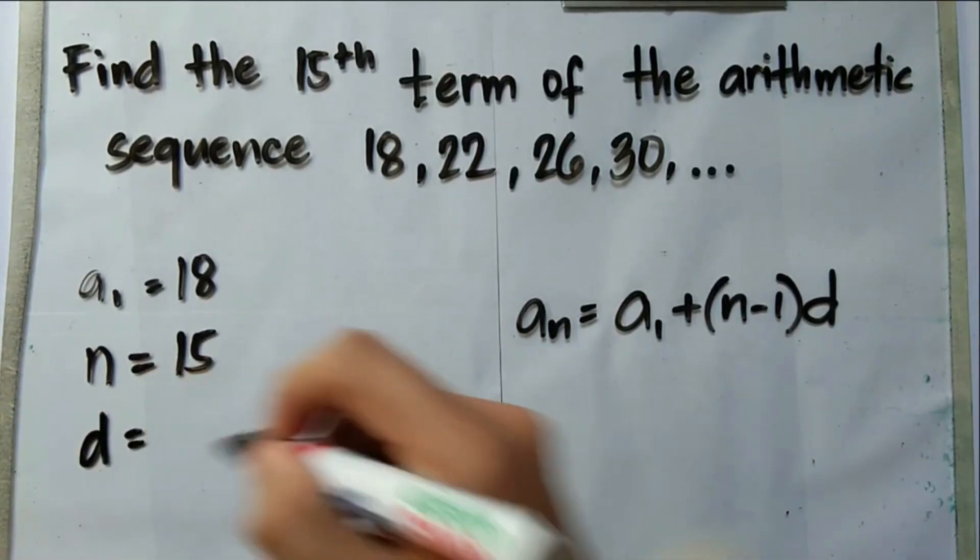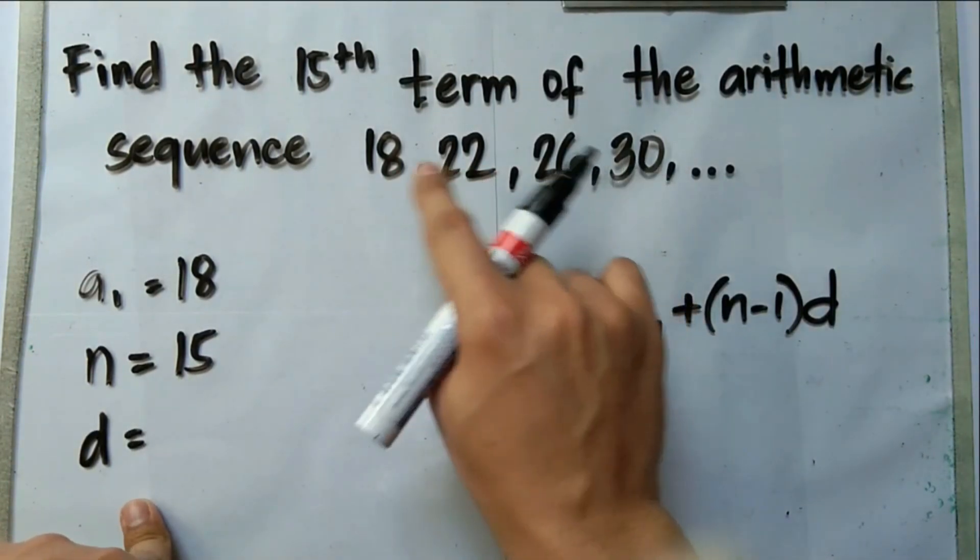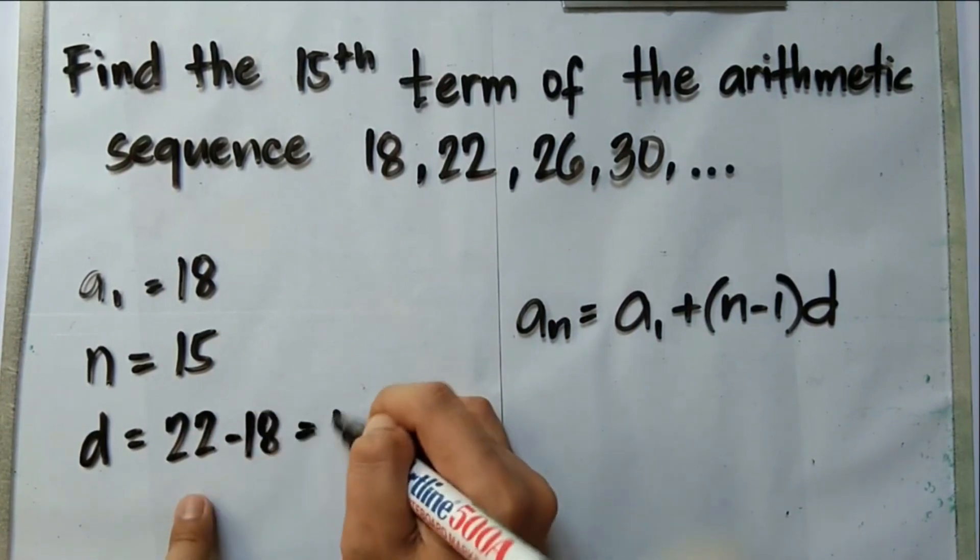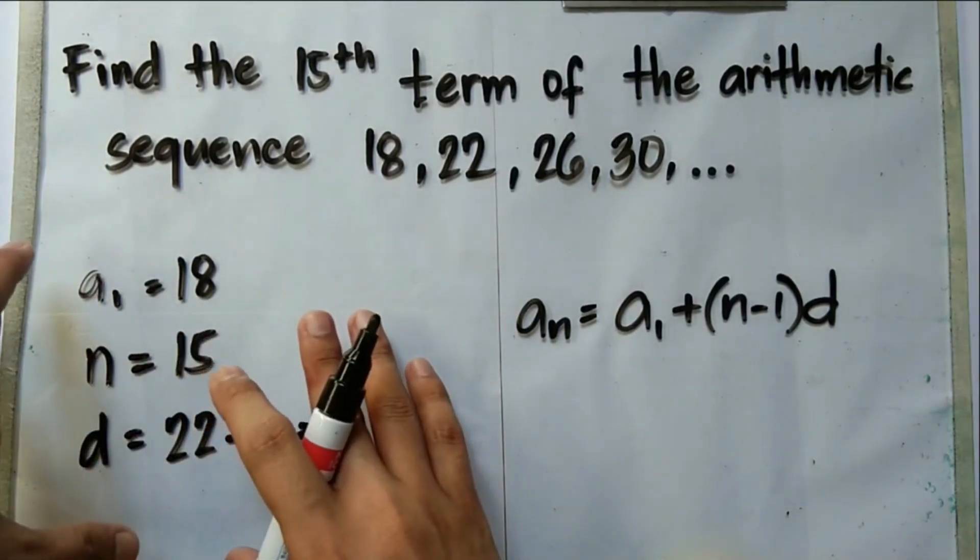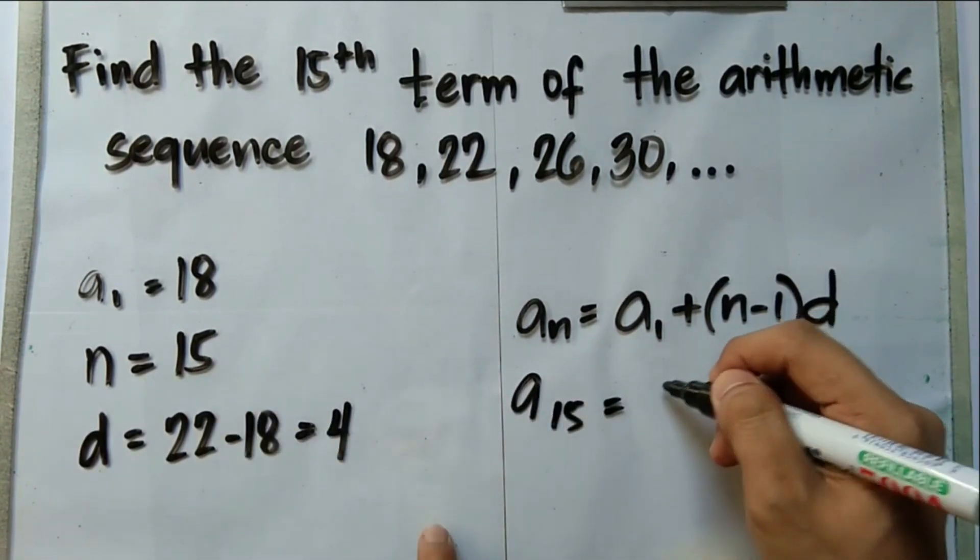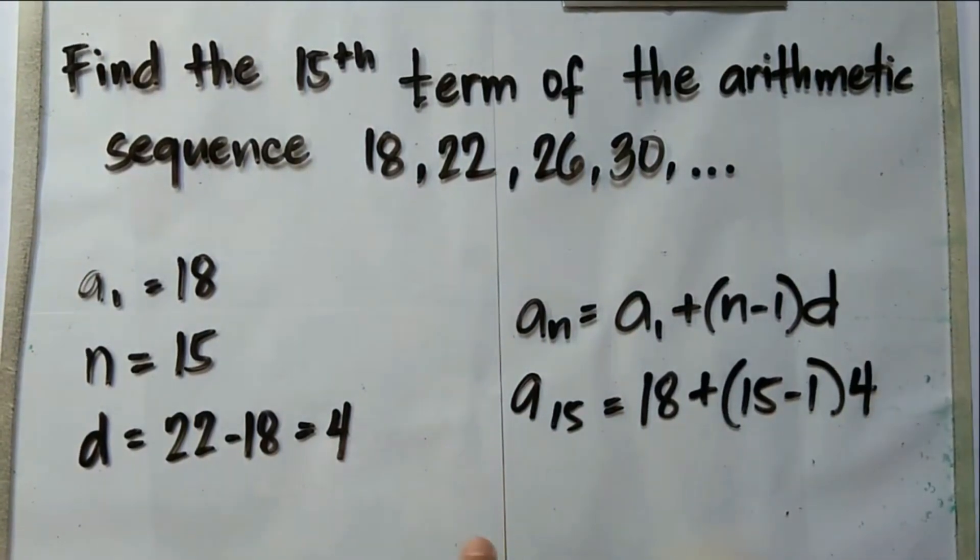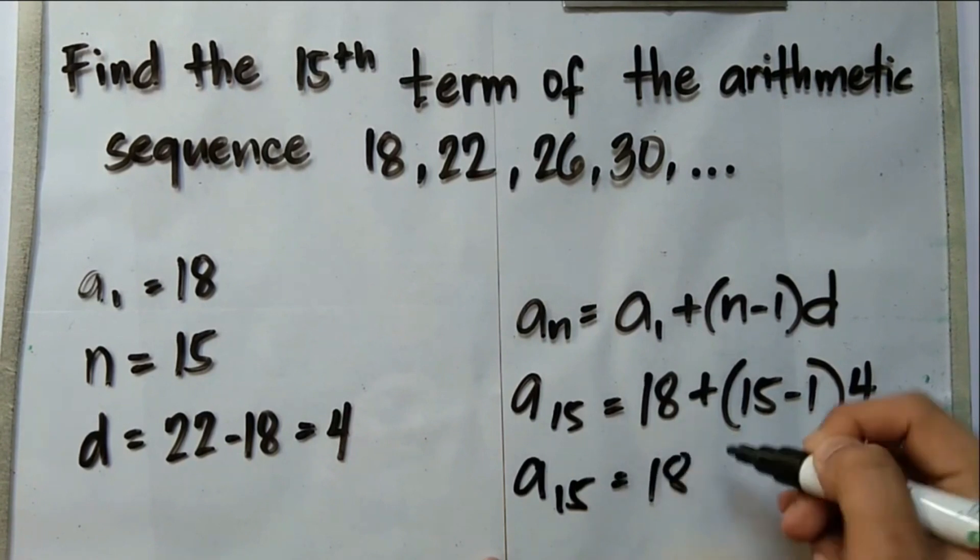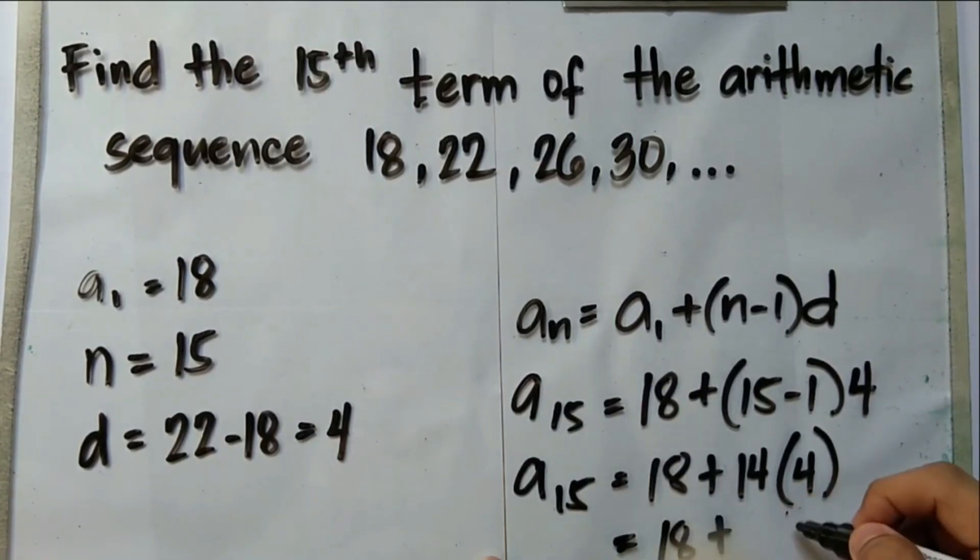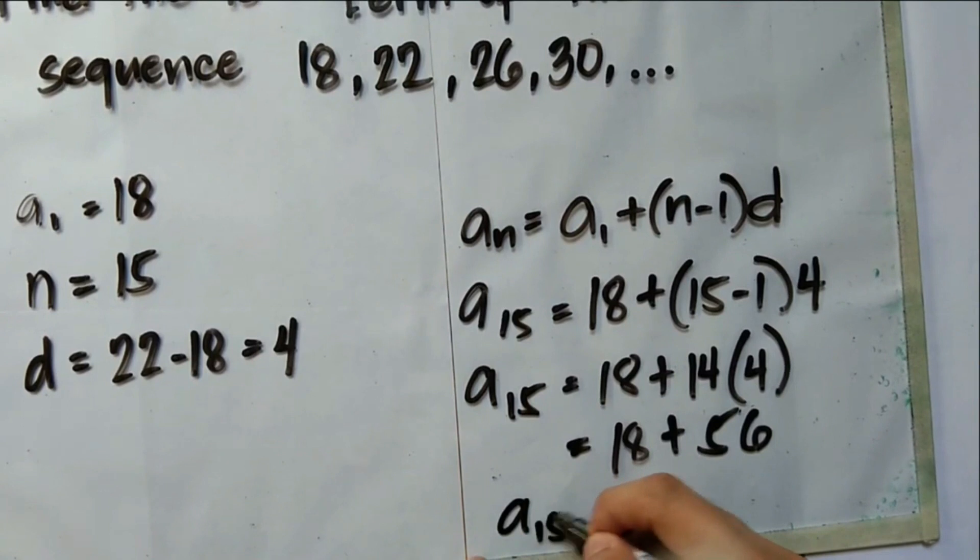Then what is the common difference or d? In finding the common difference, as mentioned earlier, you need to subtract the succeeding term by the preceding term. So that could be 22 minus 18 or 26 minus 22. This is 22 minus 18 or 4. Now after finding these values, we may now substitute these numbers to our formula. a₁₅ or the 15th term is equal to a₁ or 18 plus 15 minus 1 times the common difference which is 4. Evaluating this value, the 15th term is 18 plus 14 times 4 or 18 plus 56, which gives us a value of 74.